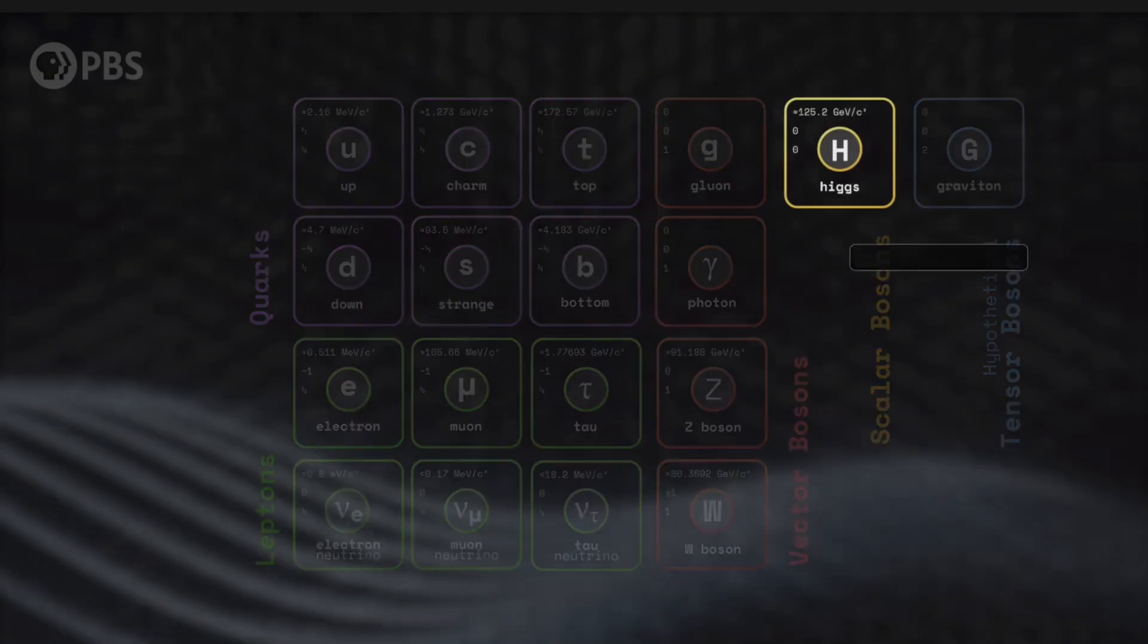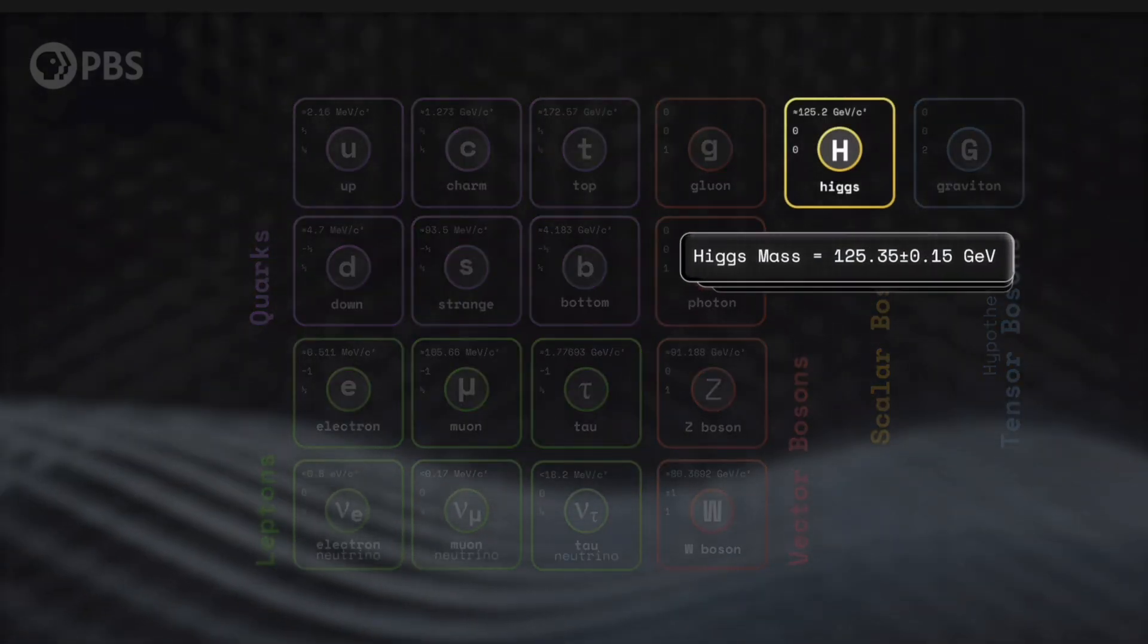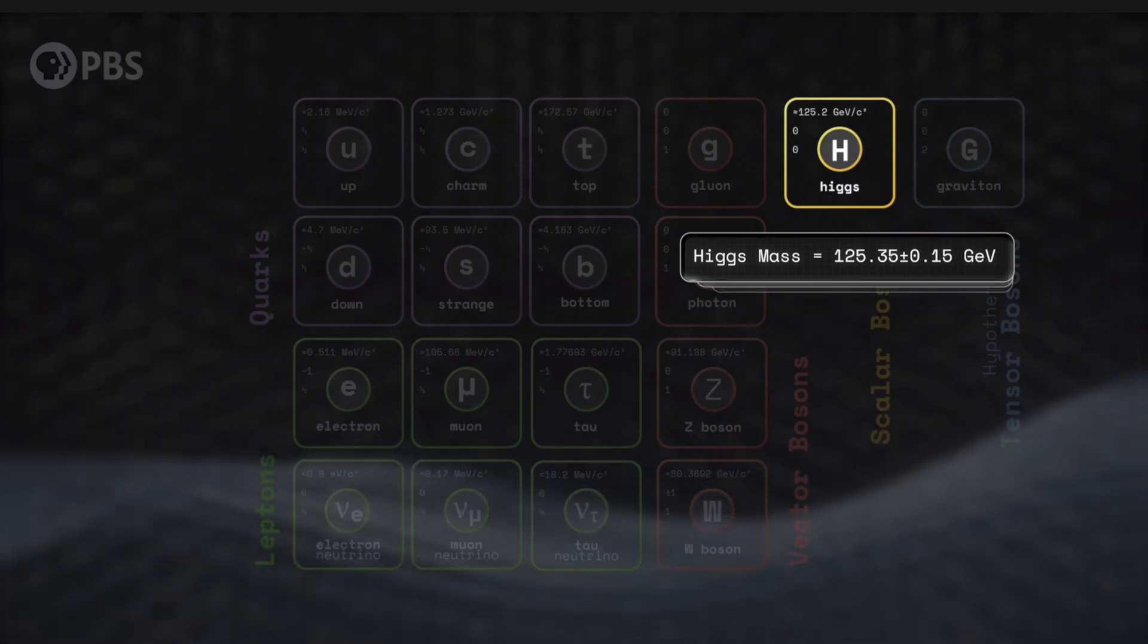The hierarchy problem, put simply, is that we don't understand why the mass of the Higgs boson is so small.